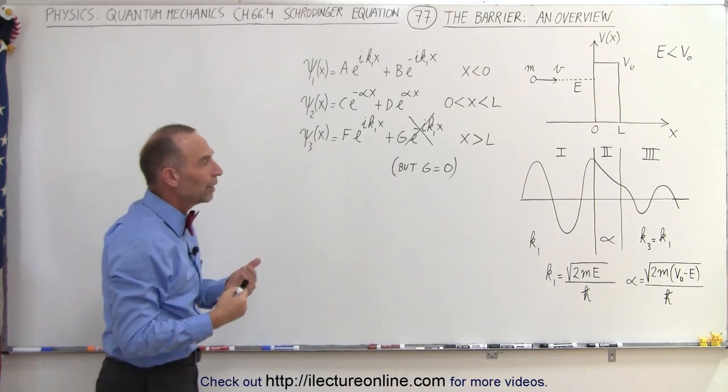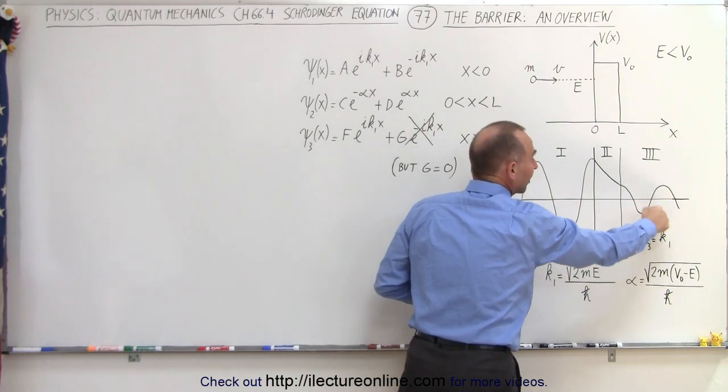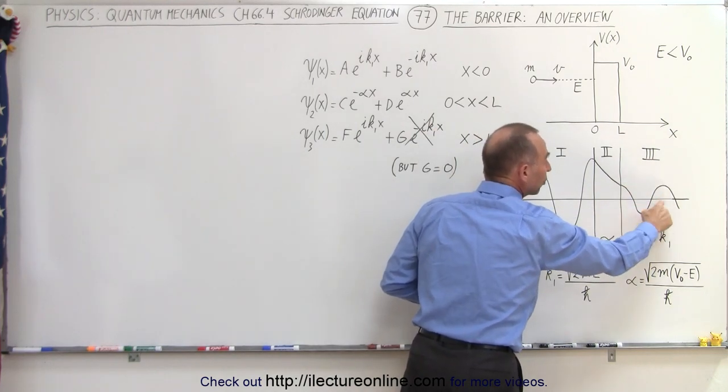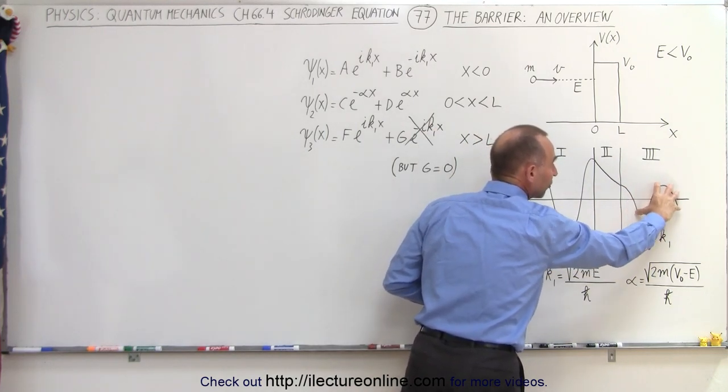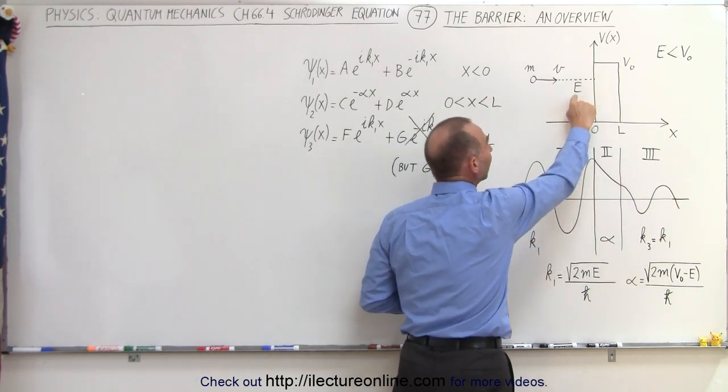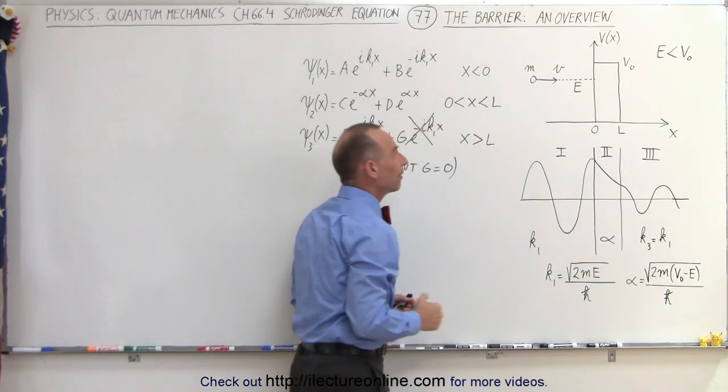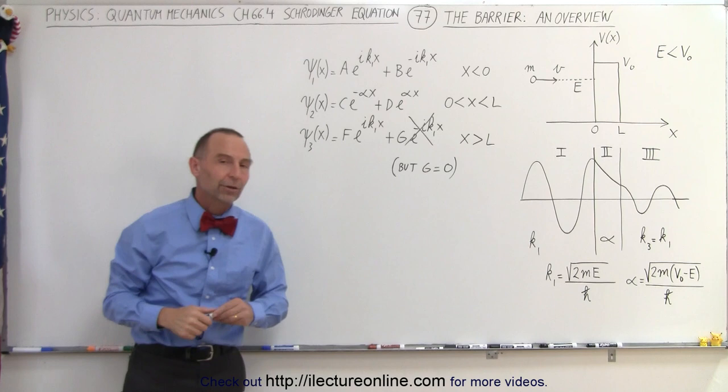So what we're interested in now is trying to determine what the function looks like on the other side, and primarily what the amplitude will be of the wave function in region 3 versus region 1, depending upon the value of the energy of the particle, the mass of the particle, and also the energy or the potential of the barrier.